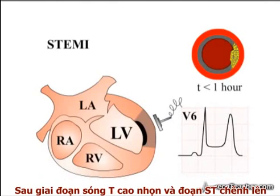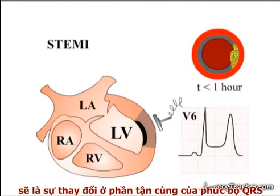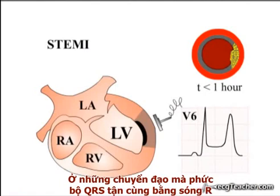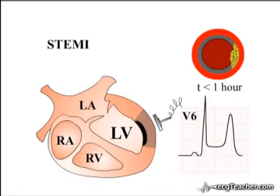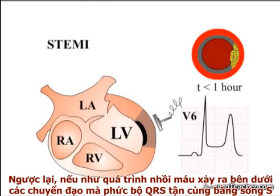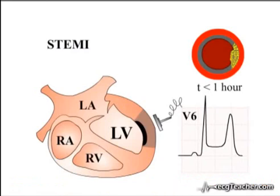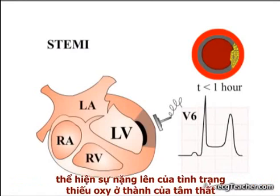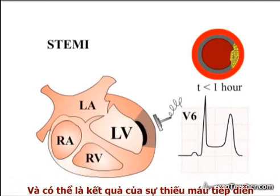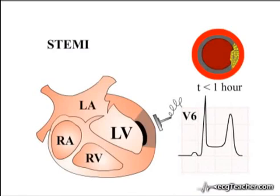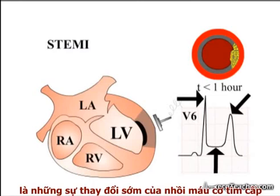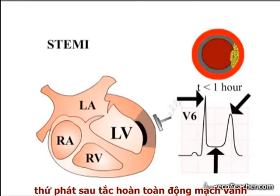In the absence of treatment, peaked T waves and ST segment elevation are followed by alterations to the terminal portion of the QRS complex. In a lead in which the QRS complex ends with an R wave, the R wave rises in amplitude. In contrast, if infarction occurs under leads in which the QRS complex ends with an S wave, the S wave may disappear. These transient changes to the terminal portion of the QRS complex reflect worsening crisis in the oxygen-starved ventricular wall, and probably result from progressive ischemia and necrosis of the Purkinje fibers, a tissue more resistant to death than working muscle. Peaked T waves, ST segment elevation, and alterations to the terminal portion of the QRS complex are the early changes of acute myocardial infarction secondary to complete occlusion of a coronary arterial vessel.